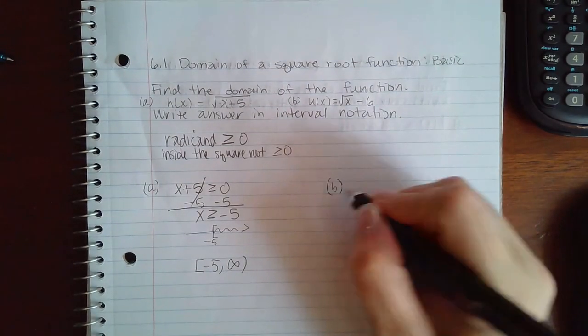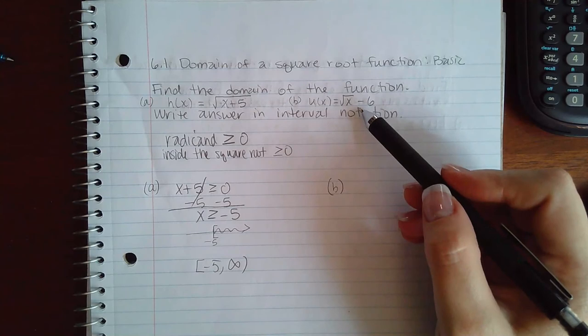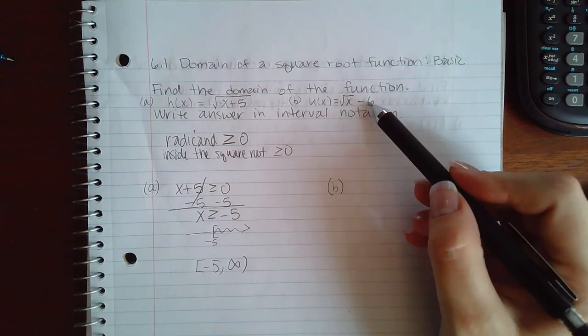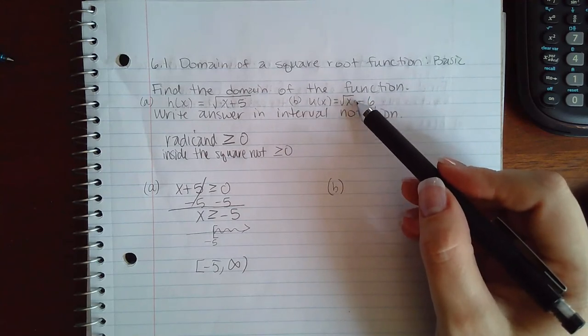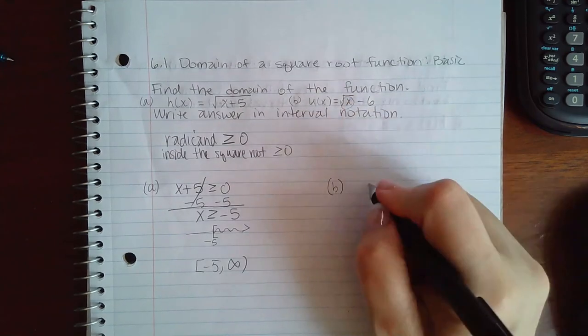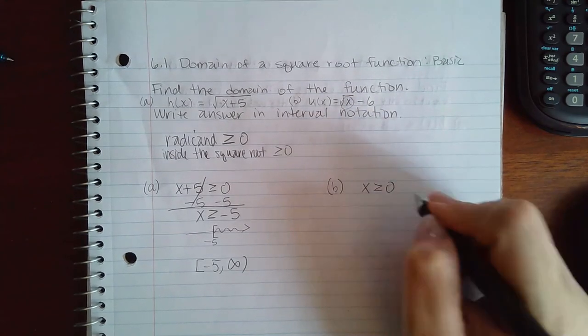For part b, the only thing inside the radical, this 6—this minus 6 is not inside the radical. So if I take only what's inside the radical and set that greater than or equal to zero,